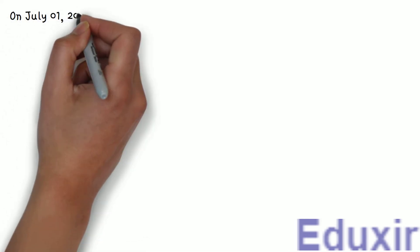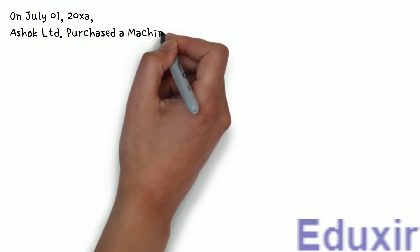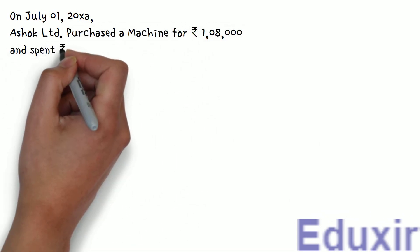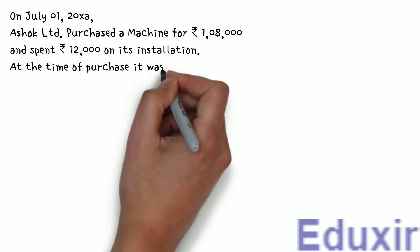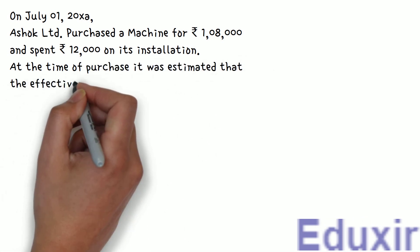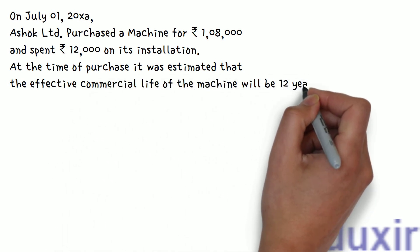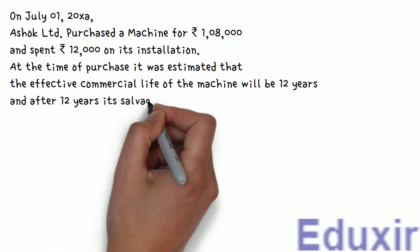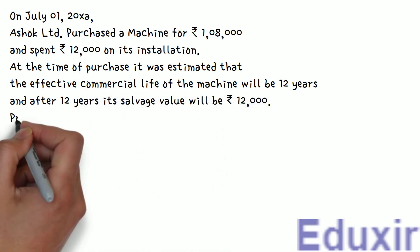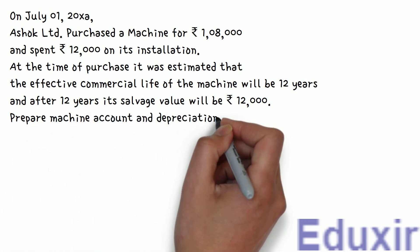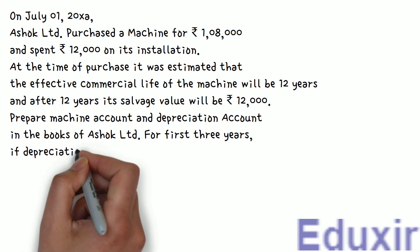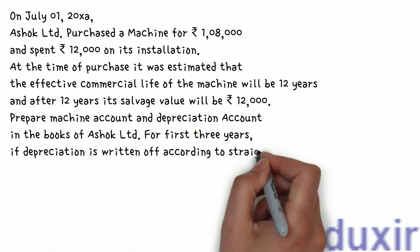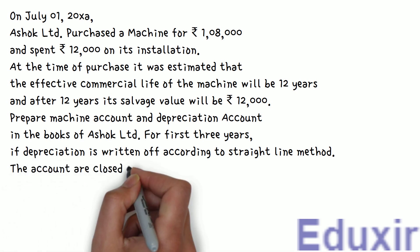The problem statement is as follows. On July 1st, 2000XA, Ashok Limited purchased a machine for ₹1,08,000 and spent ₹12,000 on its installation. At the time of purchase, it was estimated that the effective commercial life of the machine will be 12 years, and after 12 years, its scrap value will be ₹12,000. Prepare machine account and depreciation account in the books of Ashok Limited for the first three years if depreciation is written off according to the straight-line method. The accounts are closed on December 31st every year.